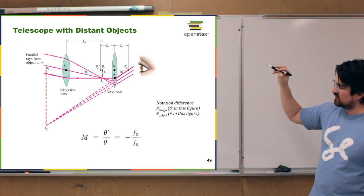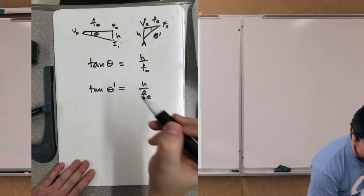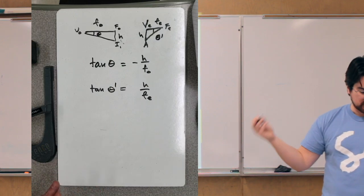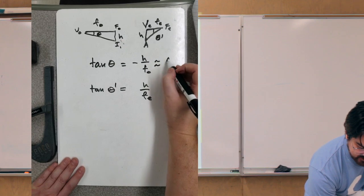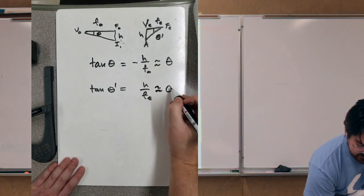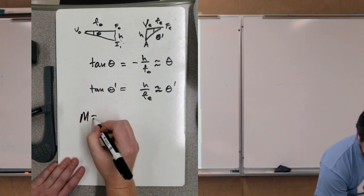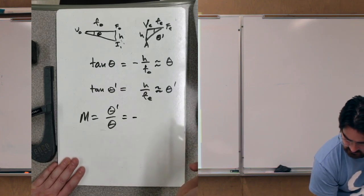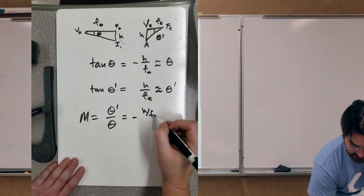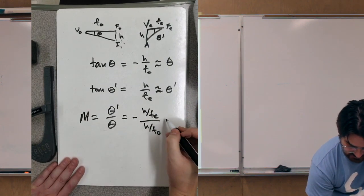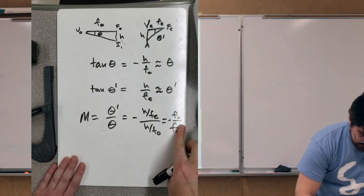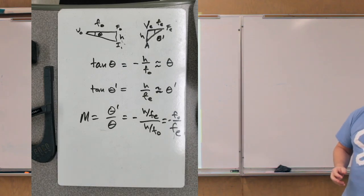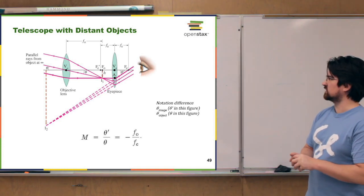One slight wrinkle: we're measuring these angles in opposite directions — one counterclockwise, one clockwise — so there's a sign difference between the tangents. Using the small angle approximation, tangent of theta equals theta and tangent of theta prime equals theta prime. Plugging our values into the magnification ratio, the image height H drops out of the formula and we're left with just the focal lengths: M = -f_objective / f_eyepiece. It's a pretty nice formula for refracting telescopes.